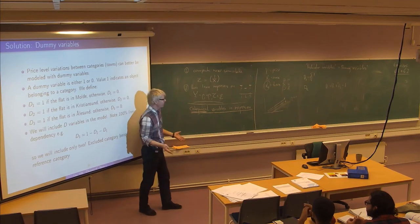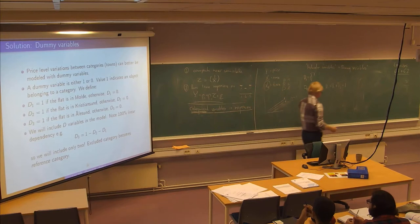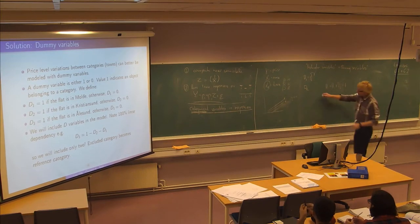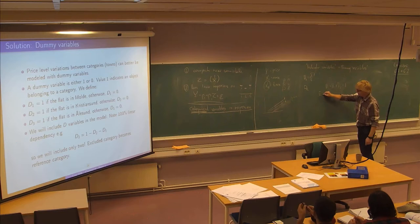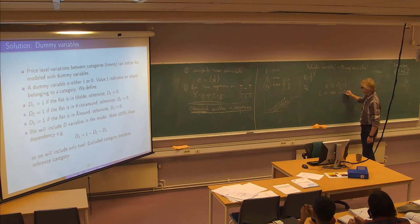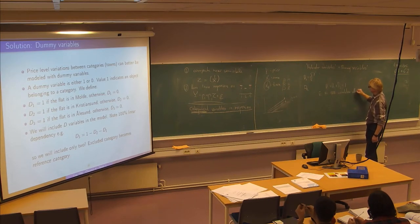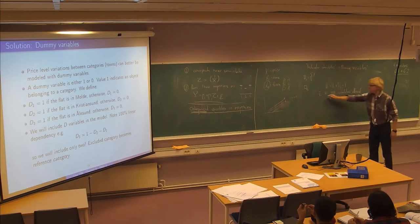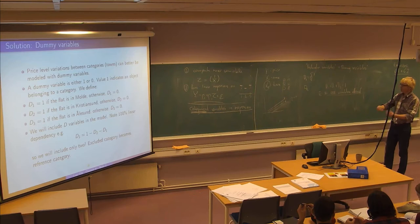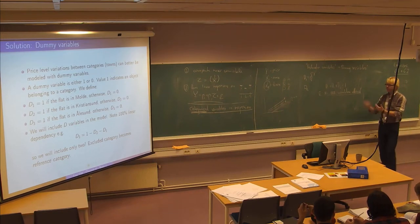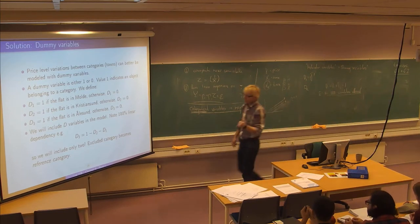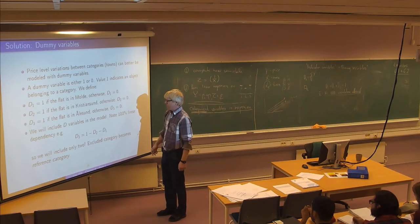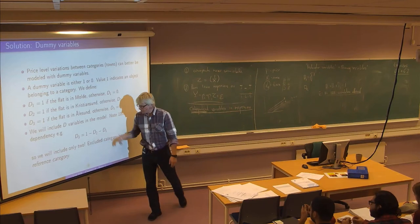If you remember one of the basic assumptions of multiple regression — assumption E — it says no 100% correlation allowed. I showed last week the trouble that appears when you have completely correlated variables in a regression. So we cannot use all three, and we don't need to either. We are going to take one of them out and use the two others in the regression model.